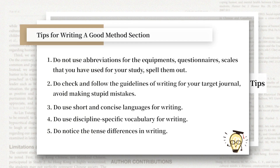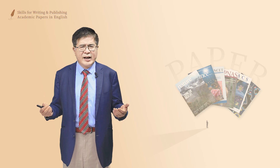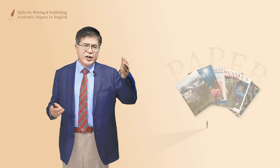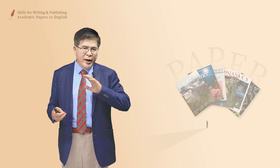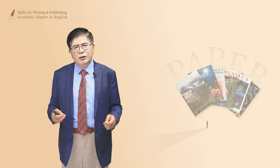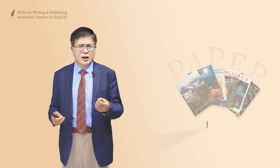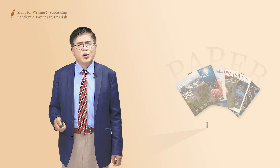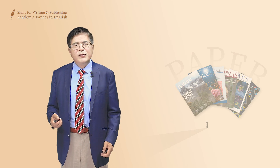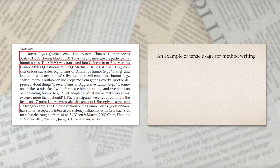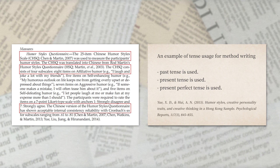Fifth, do notice the tense differences in writing, because people often get confused about whether to use past tense, present tense, or present perfect tense. As stated earlier, when you report on your research procedure, use past tense; when you report on materials used, use present tense or present perfect tense. If you're unsure, check a few exemplary papers and you will know what to do. I give examples from one of my published articles showing all three tenses used depending on what is being described.